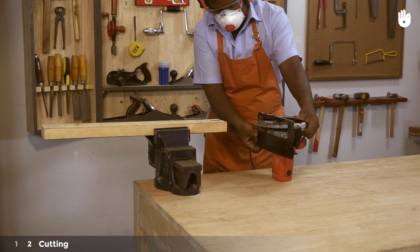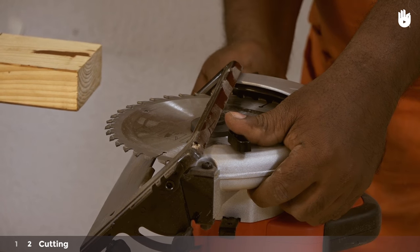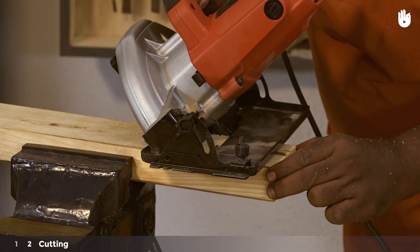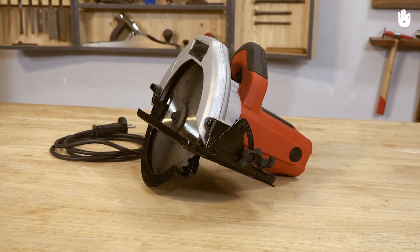You can also adjust the angle of your cut by loosening the angle locking lever. You now know how to use a circular saw.